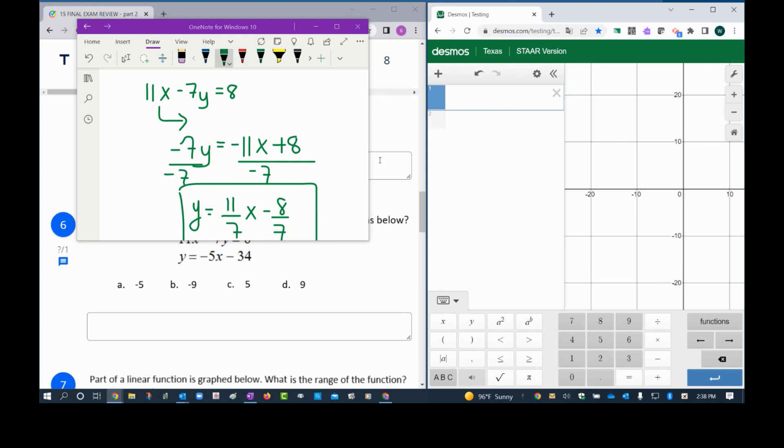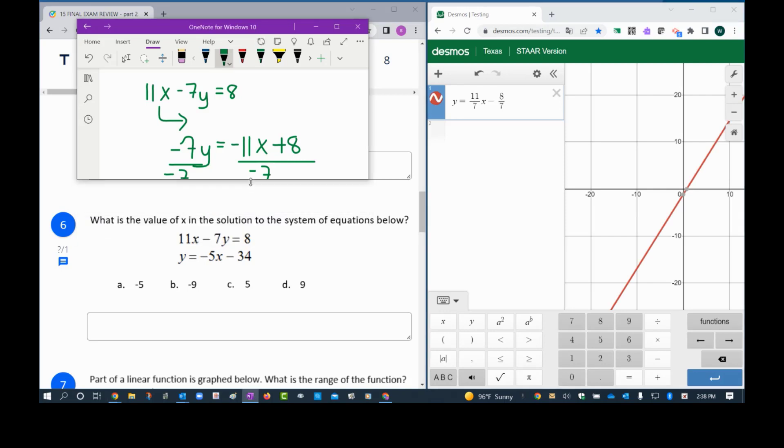Let's go ahead and clear this out, and let's enter this equation. Y equals 11 over 7x minus 8 over 7. So that's my first line, and the second line, notice right there this was the first line that I got the y alone.